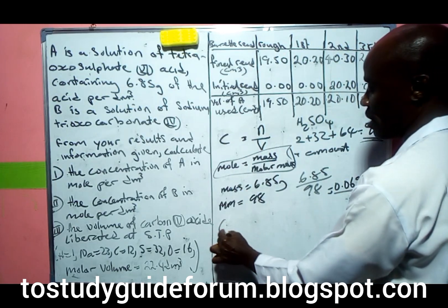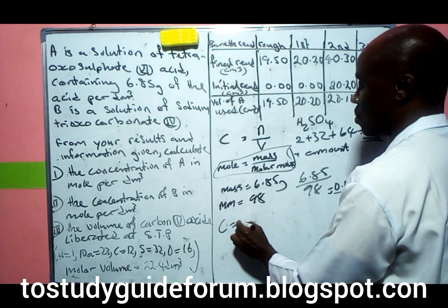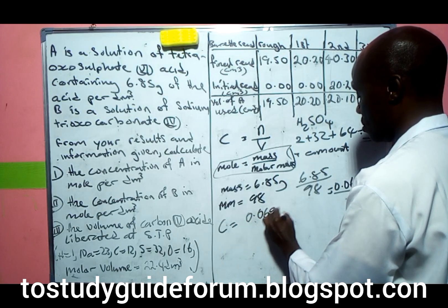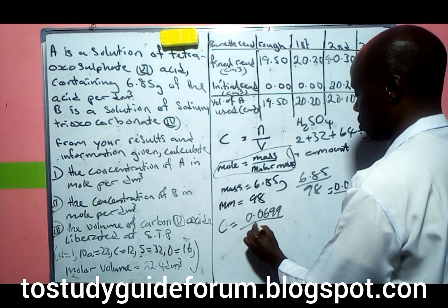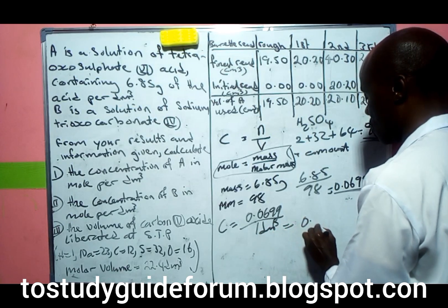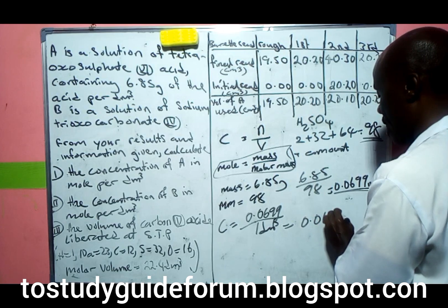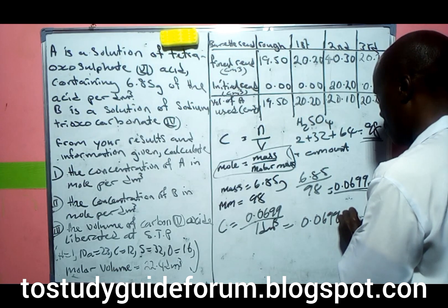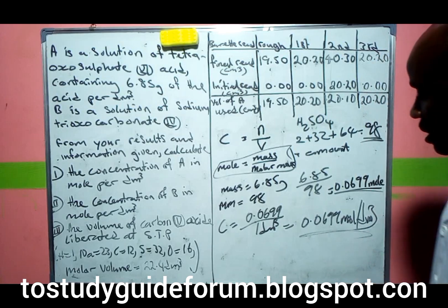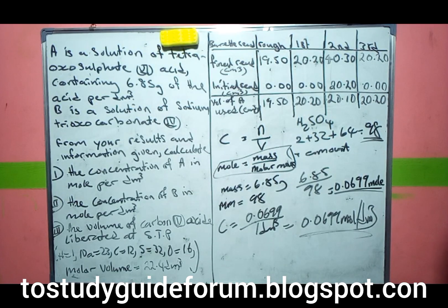The concentration is therefore 0.0699 mol per dm³. That's our concentration of A.